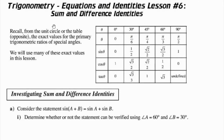We are talking about trigonometry, equations and identities, lesson number six: sum and difference identities. Recall from the unit circle, or the table here, that we can find the exact values of the primary trig ratios of special angles — angles like 30 degrees, 45 degrees, 60 degrees, and 90 degrees, and of course their equivalent radian measure.